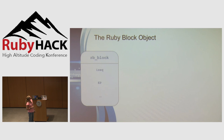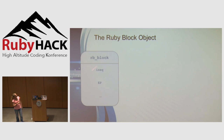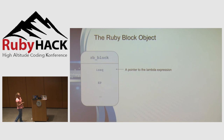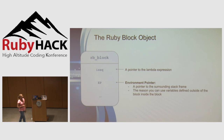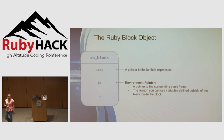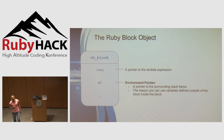In the underlying C code for Ruby, the block is actually an object called rb_block (rb_block_t in Ruby 2.2 and lower). It has an iseq pointer — a pointer to the lambda expression of the closure — and an environment pointer, which points to the surrounding stack frame of the block, where all local variables of the currently executing method are located. It's this environment pointer that is the reason you can use variables defined outside the scope of your block inside your block.